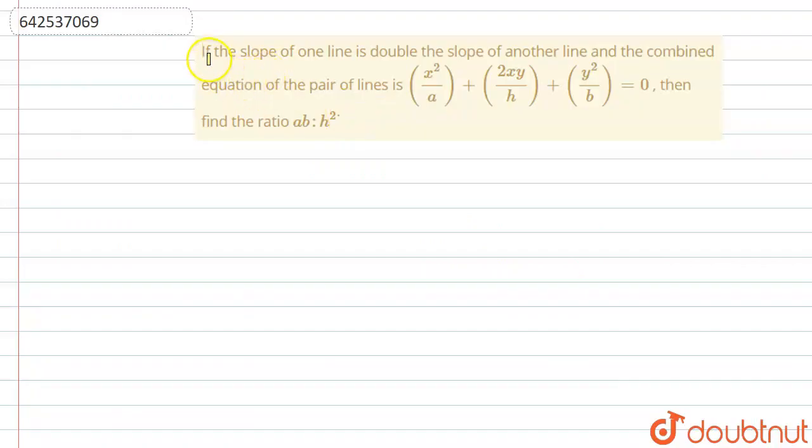In this problem, we are given that if the slope of one line is double the slope of another line and the combined equation of the pair of lines is x²/a + 2xy/h + y²/b = 0, then find the ratio ab:h².